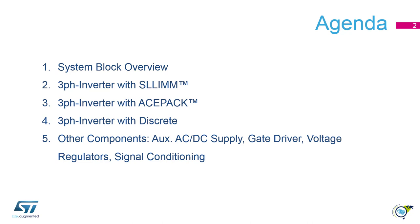System block overview to explain where the components are located in the circuitry. Then we will see an example of a three-phase inverter using slim intelligent power modules, followed by a three-phase inverter example using ASPAC modules, followed by one using discrete components. At the end we will have a brief talk about the other components.